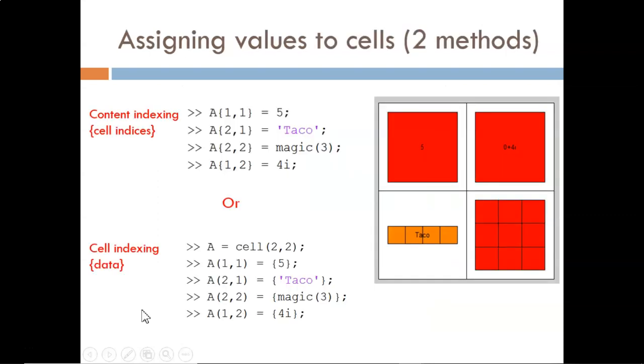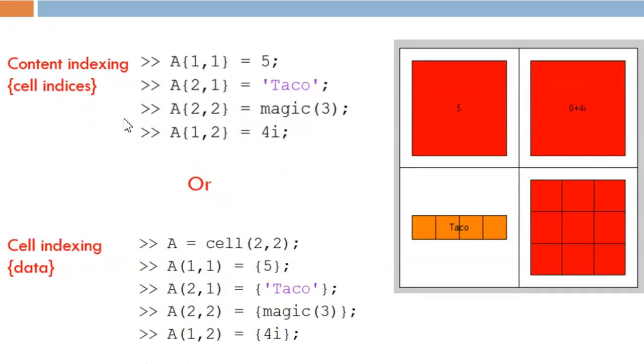Two methods are shown here for creating the cell array we just looked at. The top example is the most intuitive, so that is the approach I will demonstrate in this course. As we have seen before, with array indexing we use parentheses to specify an individual index. With cell arrays we use curly braces to specify an individual cell. Read and type carefully.